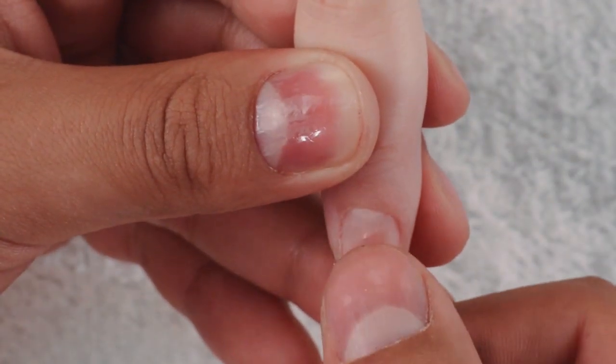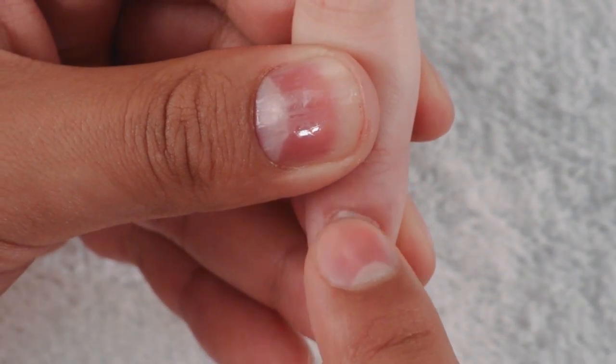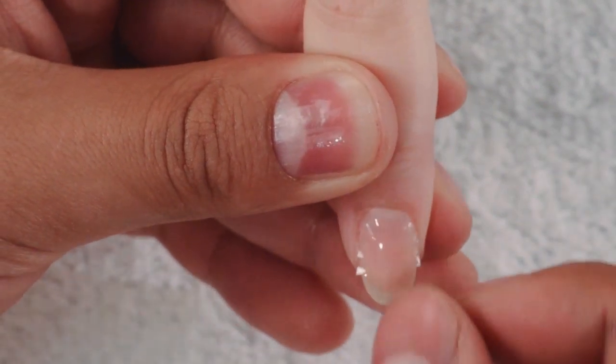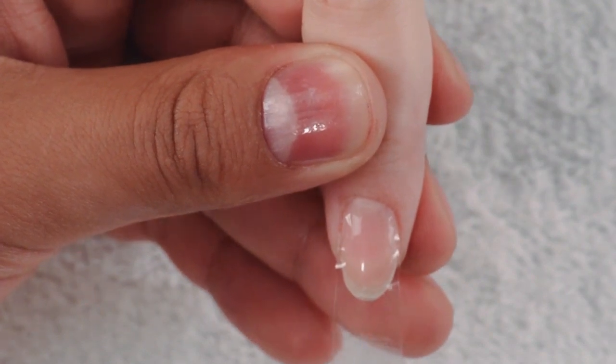Once you get it to the right spot you're going to press with your finger right in the middle. Try to get it close to the corners and with the little help of a wooden stick we're going to push on the cuticle area.